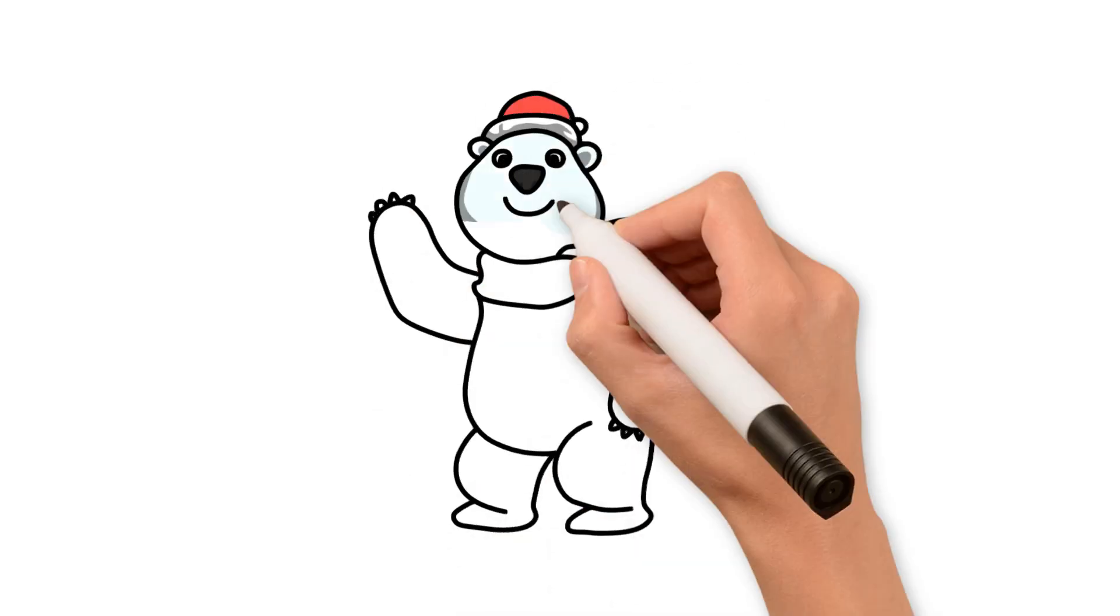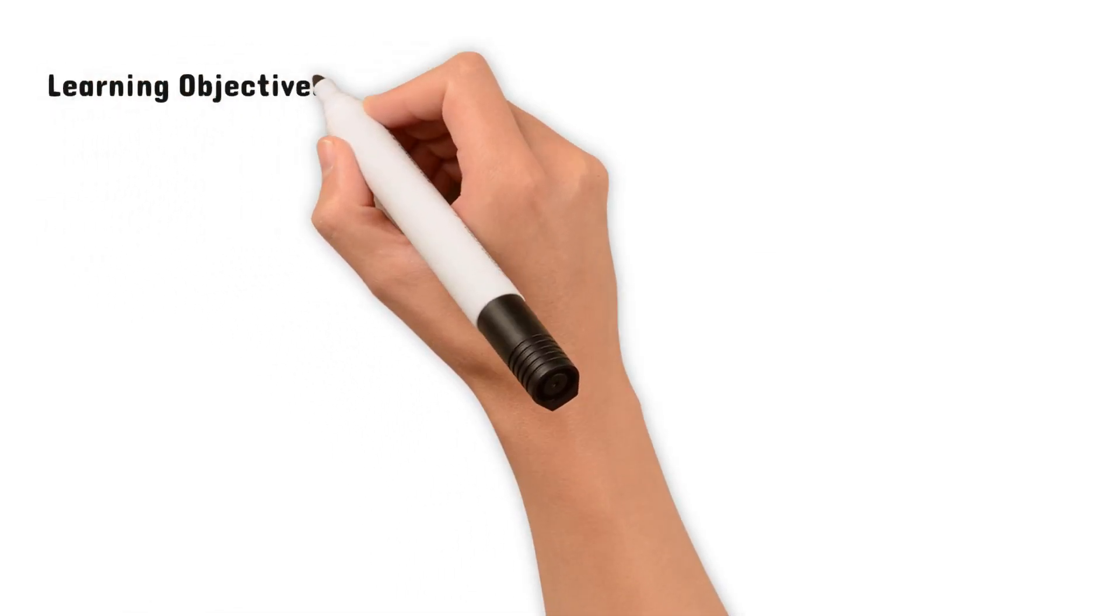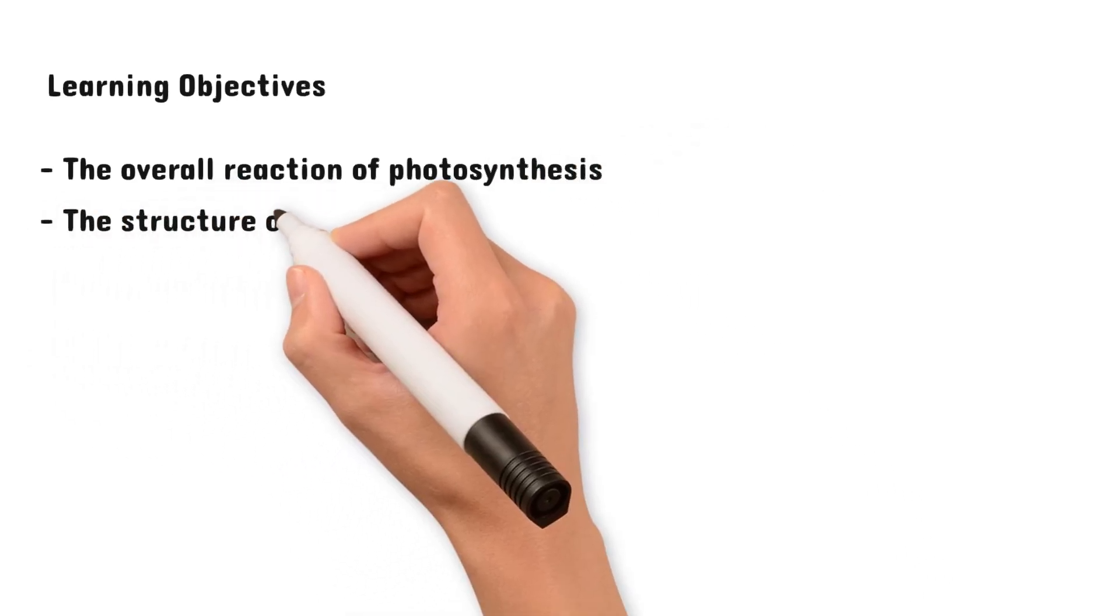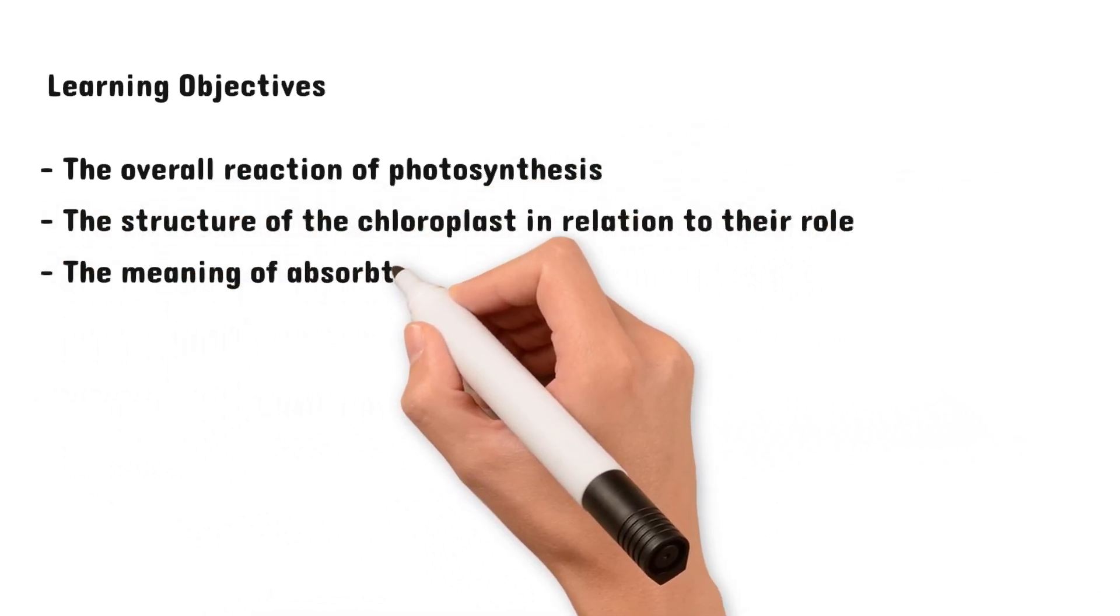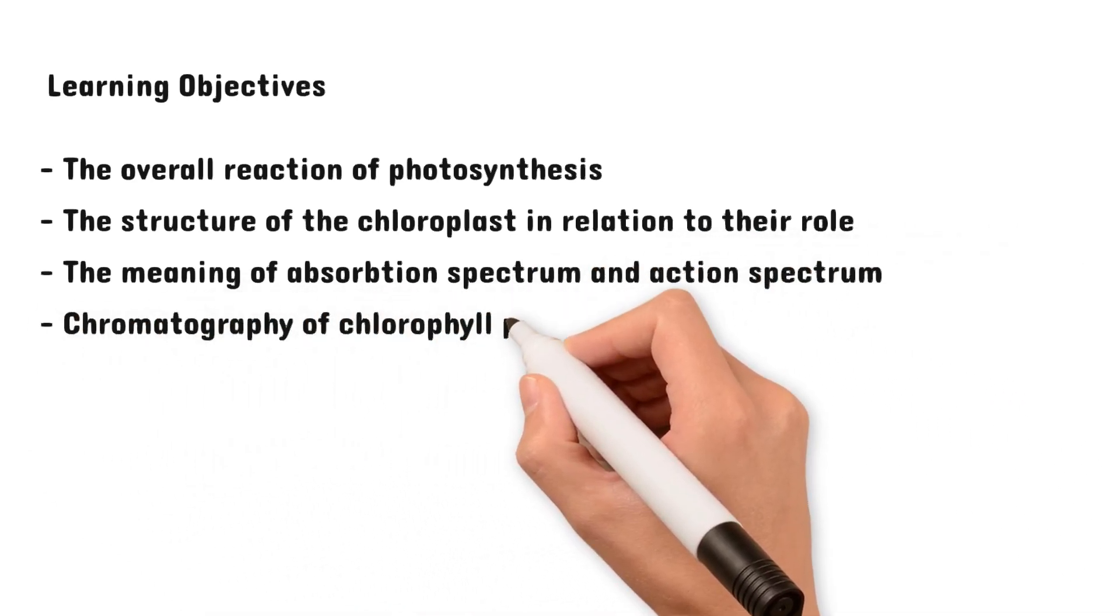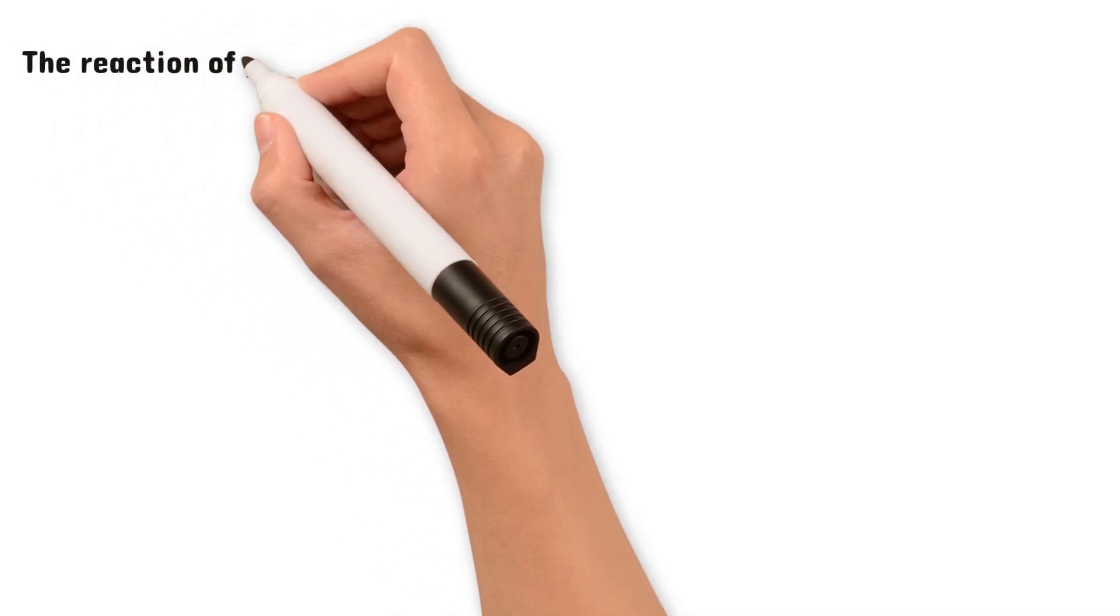Welcome to Brilliant Biology. Today we're diving into topic 5A2: chloroplasts and chlorophyll. By the end of this video, you should learn the overall reaction of photosynthesis, the structure of chloroplasts in relation to their role, the meaning of absorption spectrum and action spectrum, and how chromatography is used to separate chlorophyll pigments. Let's begin by looking at the reaction of photosynthesis.